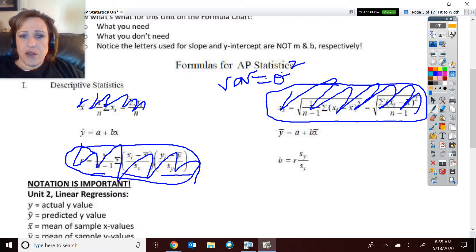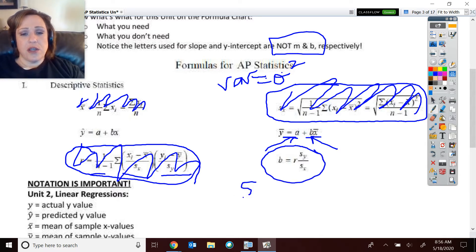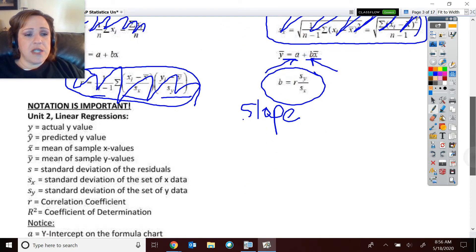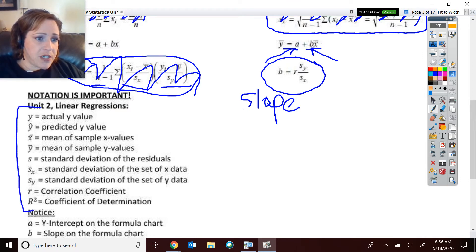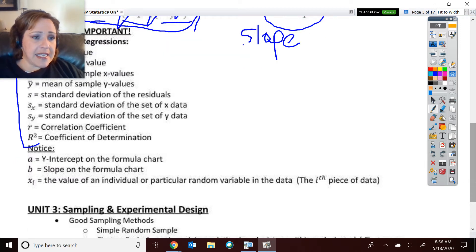But we didn't go into doing this by hand. I know some universities do, but we didn't. Notice that the letters used on these formula charts are not the typical M and B. They're A and B. And interestingly enough, B is the slope. A is the y-intercept. Which makes this right here a way to compute the slope if you have your correlation as a standard deviation of the y's and the standard deviation of the x's. So I just wanted to point those items out to you. Notation, super important. So go through, walk through all of those. Make sure you know all of those different notations. And again, notice that the A is the y-intercept on the formula chart. B is the slope on the formula chart.